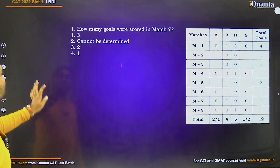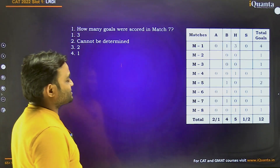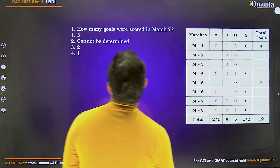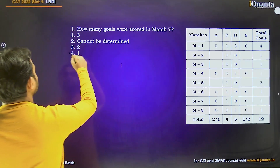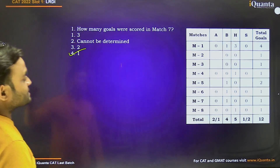First question: How many goals were scored in match 7? Match 7 had 1 goal scored. Option 4 is correct.